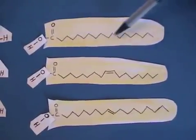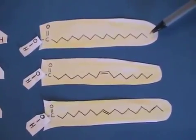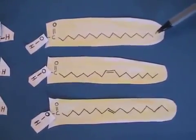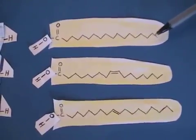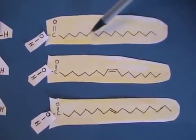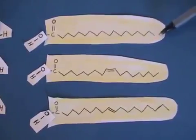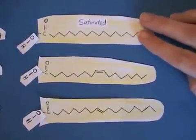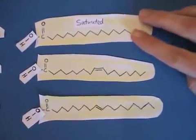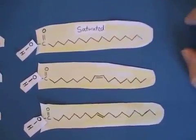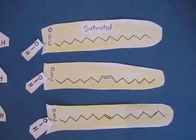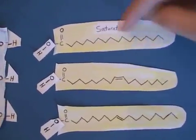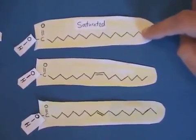We call this top chain saturated because there are no double or triple bonds. It contains as many hydrogens as possible for these carbons on this long fatty acid chain. This molecule is a saturated fatty acid. It will clog your arteries, it is not going to be very soluble in water, and it's going to form a plaque that will attract other plaque-type molecules. It's not good when taken in excess.